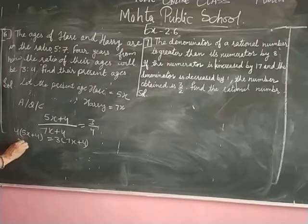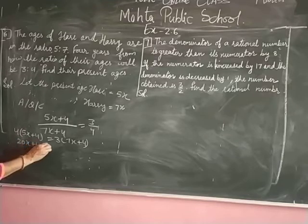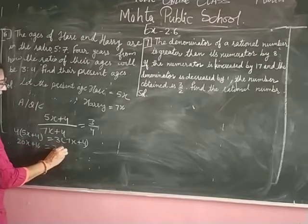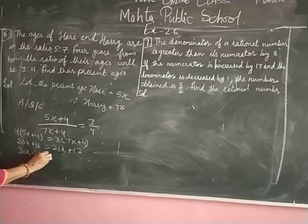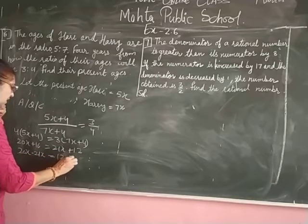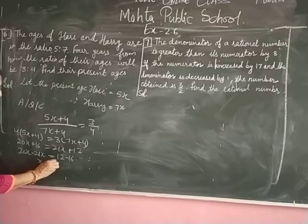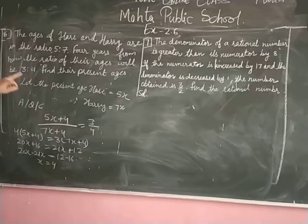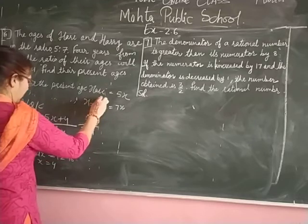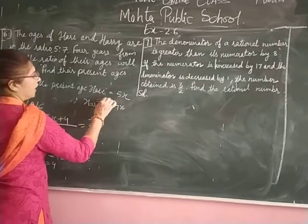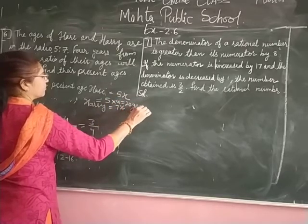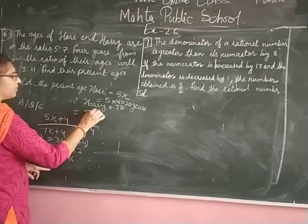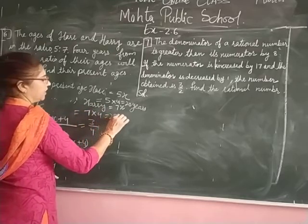Expanding: 20x plus 16 is equal to 21x plus 12. Rearranging: minus 21x plus 20x is equal to 12 minus 16, giving x is equal to 4. Therefore, the present age of Hari is 5 into 4 equals 20 years, and the present age of Harry is 7 into 4 equals 28 years.